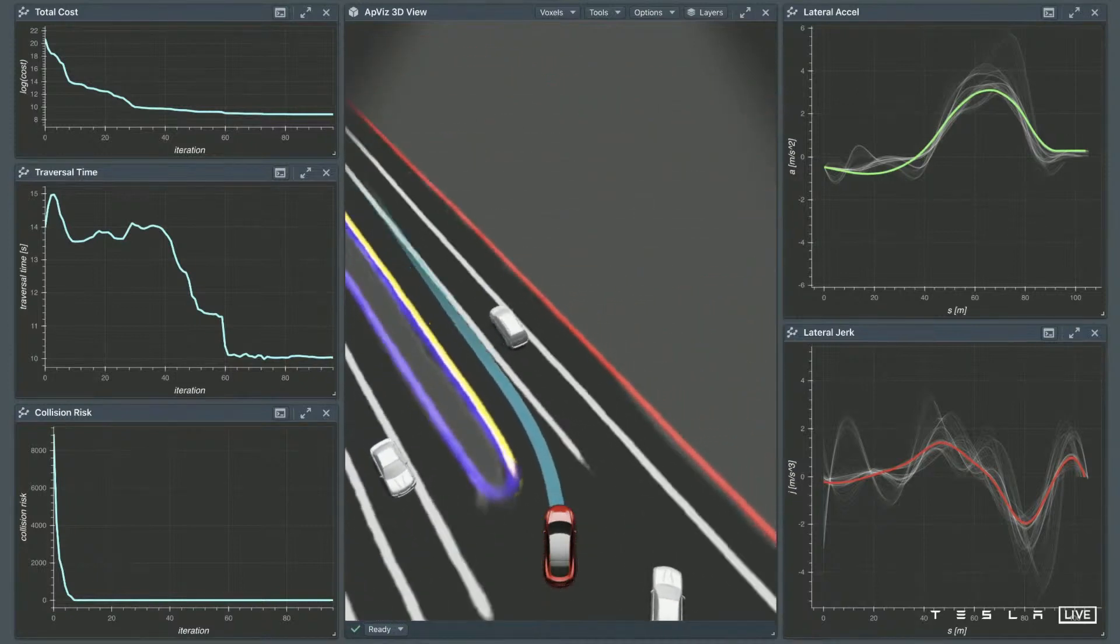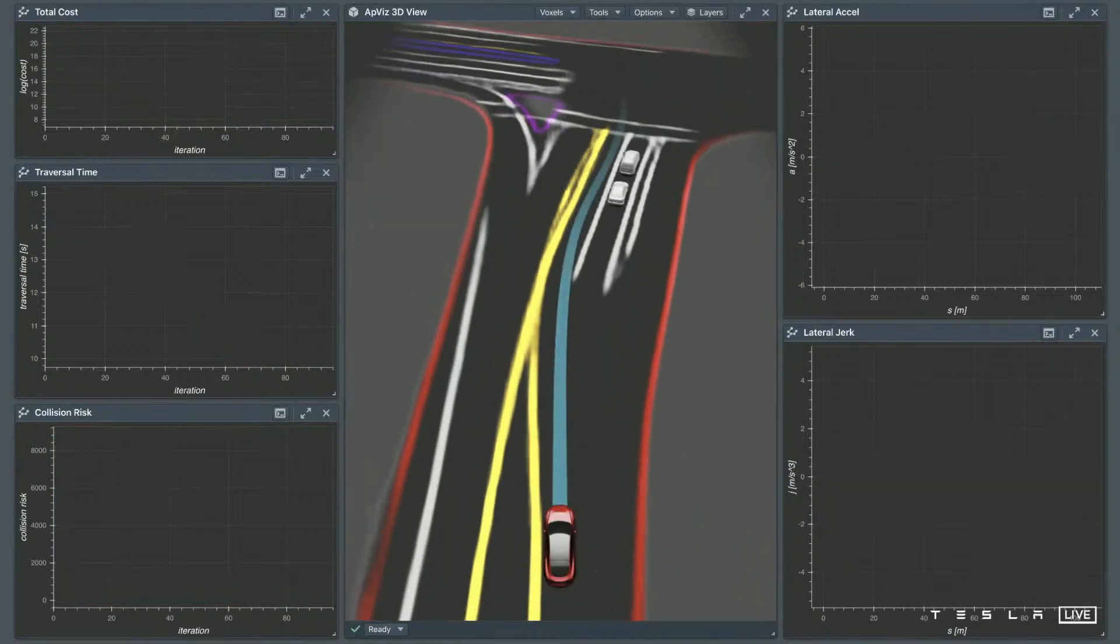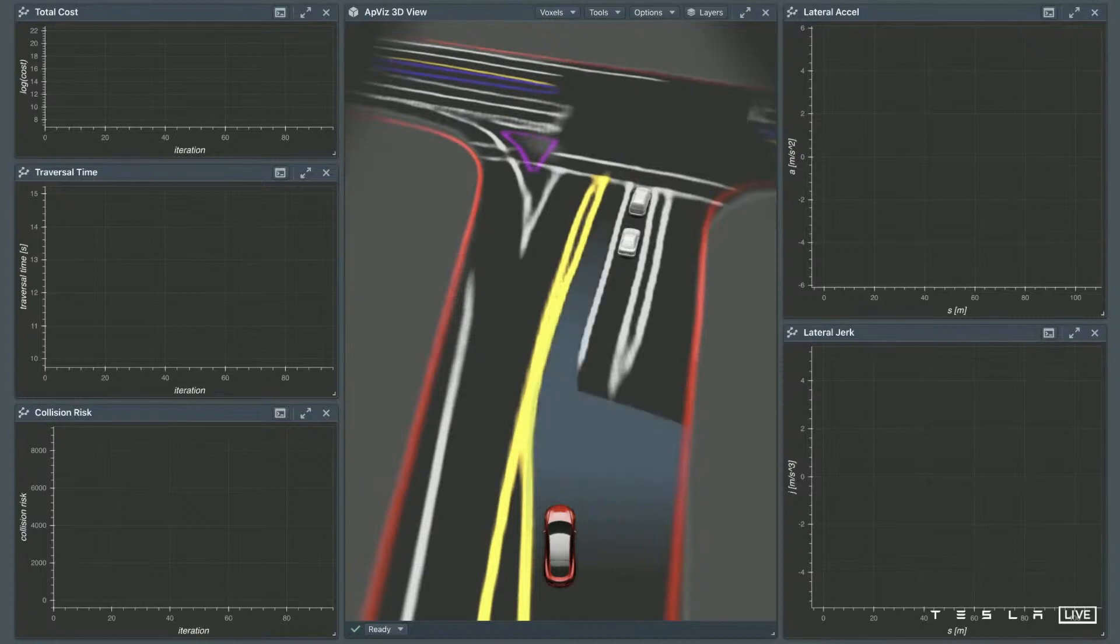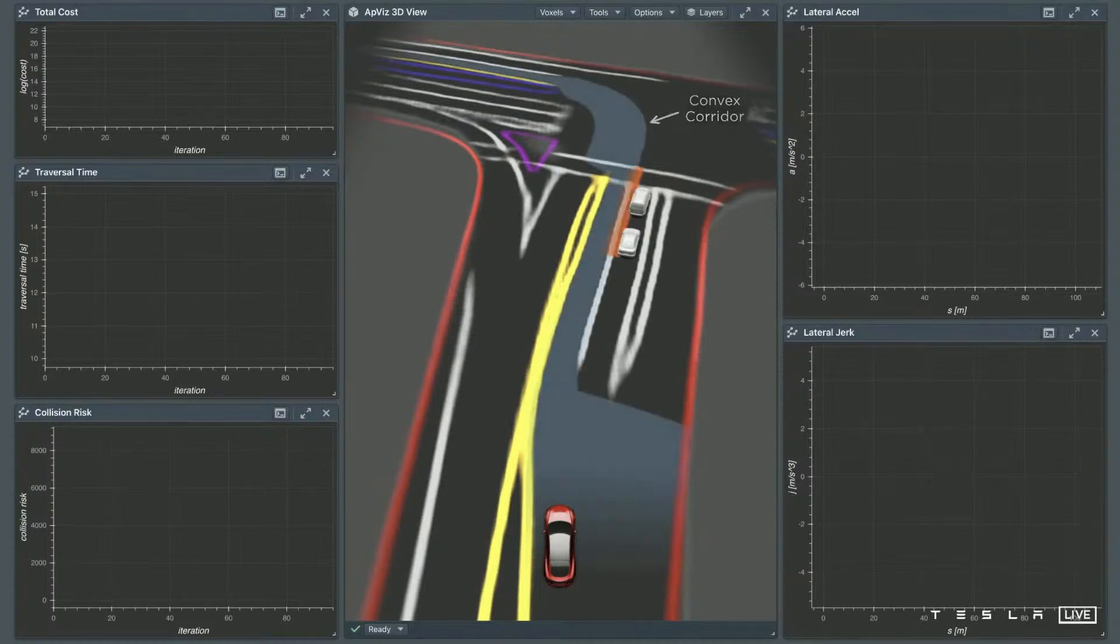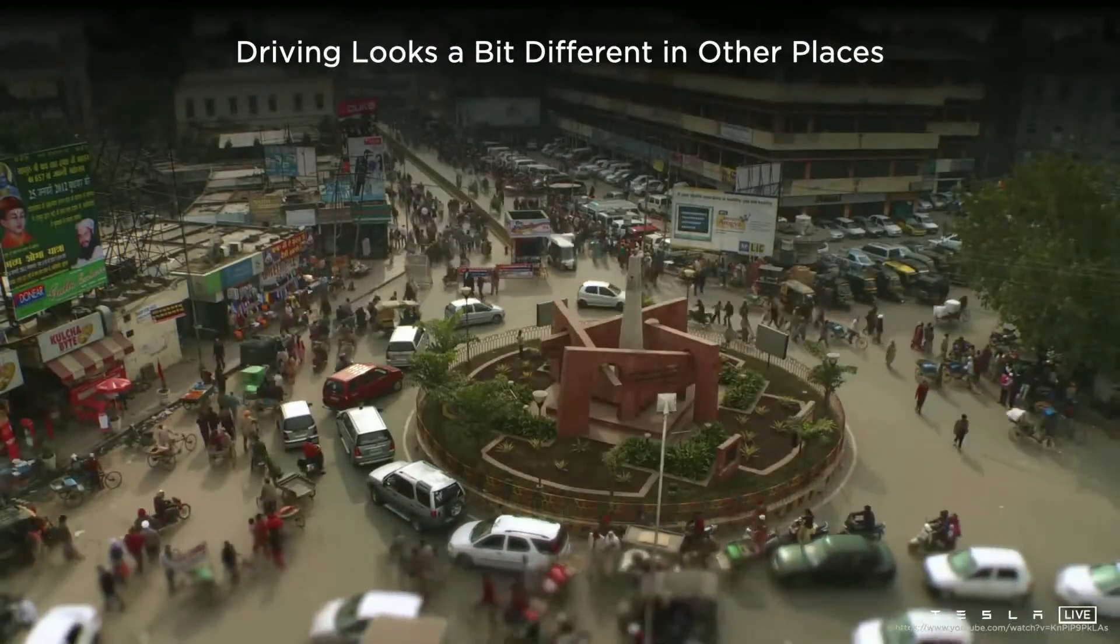So in summary, we do a search for both us and everyone else in the scene. We set up a convex corridor and then optimize for a smooth path. Together, this can do some really neat things like shown above. But driving looks a bit different in other places, like where I grew up from.